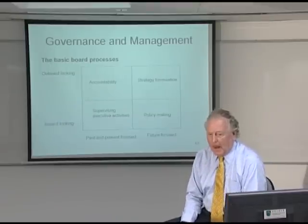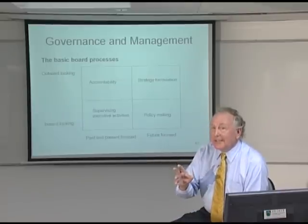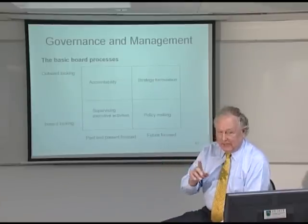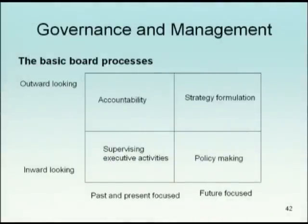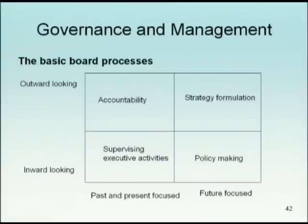Let's just focus on it for a moment. It's only a 2x2 matrix — inevitably over-simple. On the left-hand axis, boards should be looking outwards. They should be seeing the business in the context of its externalities: its competitors, its customers, its supply chains, the government. But the board also needs, at the bottom of the chart, to be looking inwards at the business — at the subsidiary companies, at the departments, at the individual employees, the things that affect the internal management of the business.